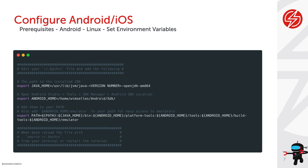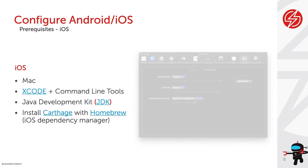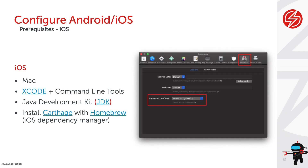Now that we've covered Android, let's take a look at iOS. For iOS, first of all you need to have a Mac, and on that Mac you need Xcode and the command line tools. You can download Xcode from the App Store. When you open Xcode, go to Preferences, then to Location, and there you can select the command line tools. For iOS you also need the Java Development Kit — if you already installed it for Android, you don't need to do it again.